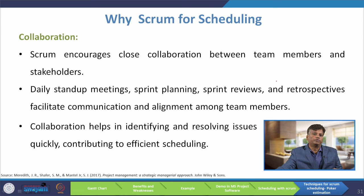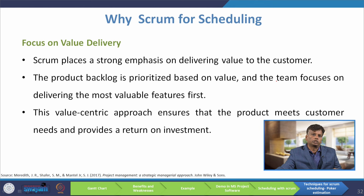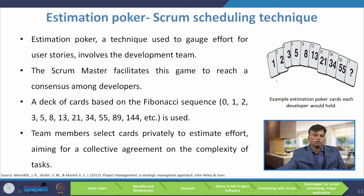Scrum places a strong emphasis on delivering value to the customer. The product backlog is prioritized based on value, and the team focuses on delivering the most valuable features first. This value-centric approach ensures the product meets customer needs. Now I am going to explain one technique called estimation poker for scheduling an agile project.